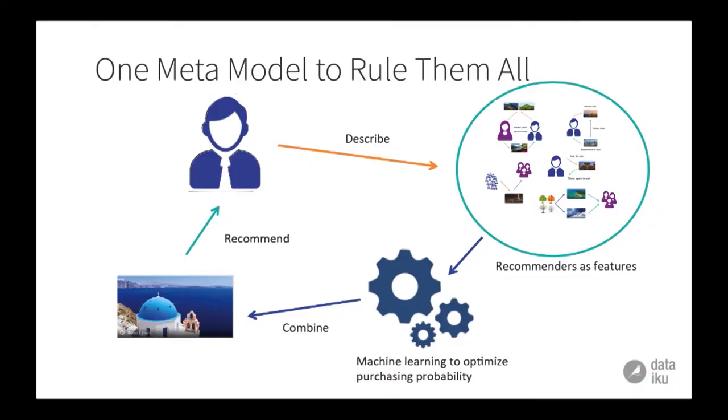If you have ten recommendations, you could potentially combine them by taking the average of the different ranks. If you want to be a bit smarter, you can take a weighted average of these different ranks. And if you want to optimize further, you can choose the weights that are optimal based on the probability that someone will purchase this actual sale — for example, by predicting the sale that someone is going to purchase through a logistic regression, taking all recommendation engines as features. Then what you learn is an optimal way to combine them all.